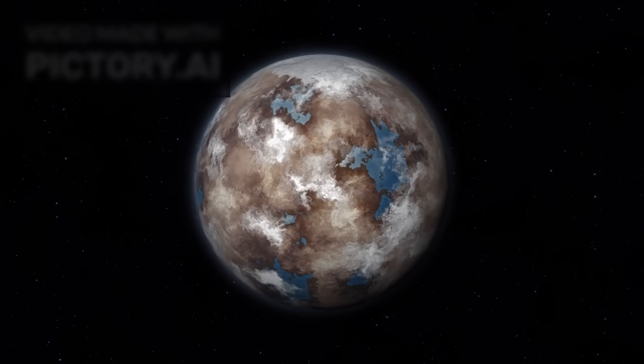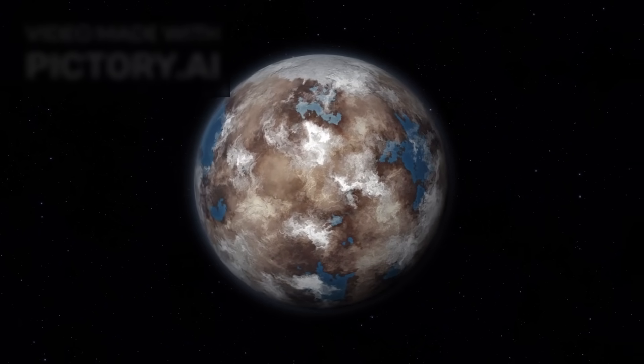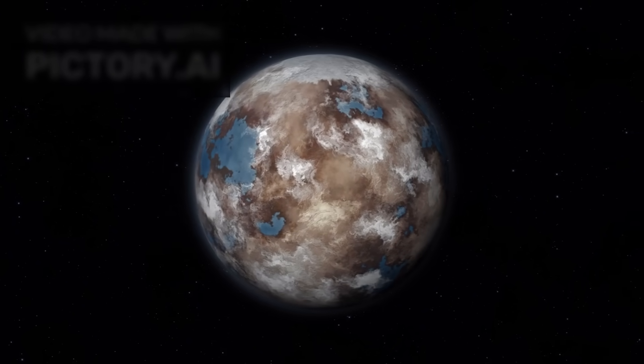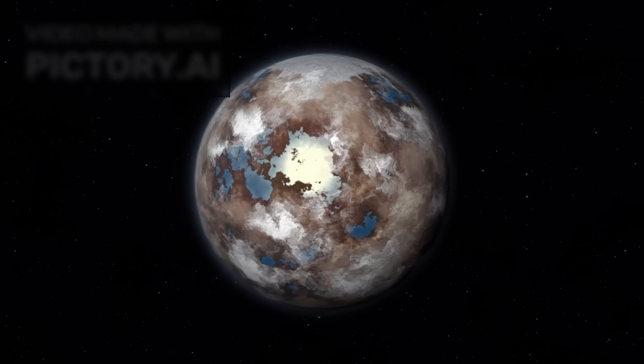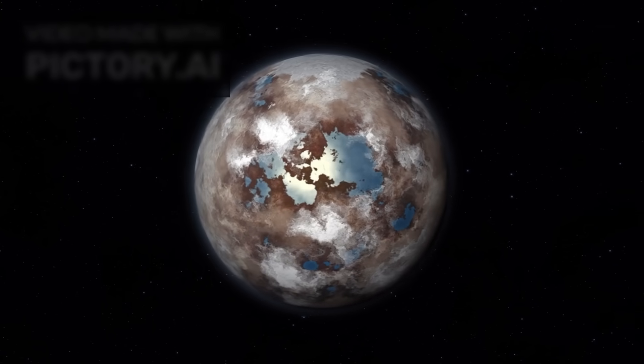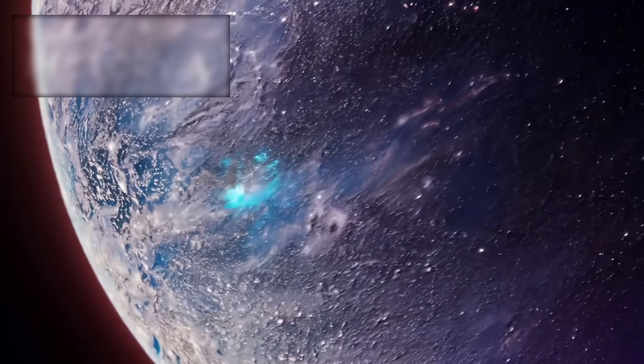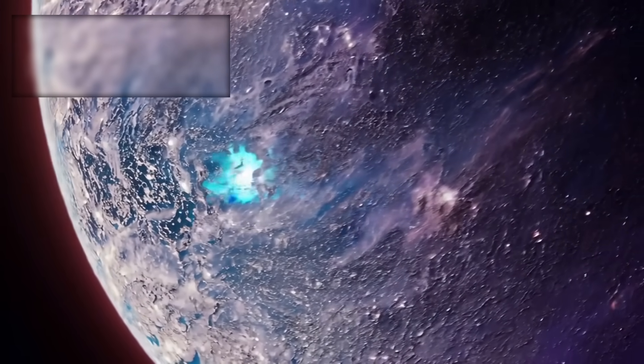This enigmatic light has been observed on Proxima Centauri b, the closest known exoplanet to Earth, and it's raising profound questions. Could this be the first artificial light we've seen from an alien civilization? While it may sound like science fiction, the data is real.